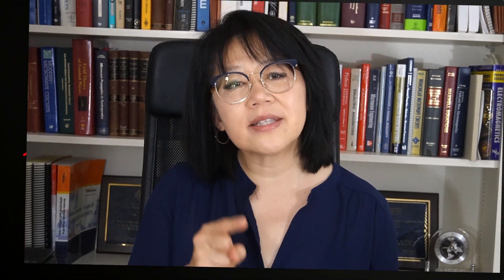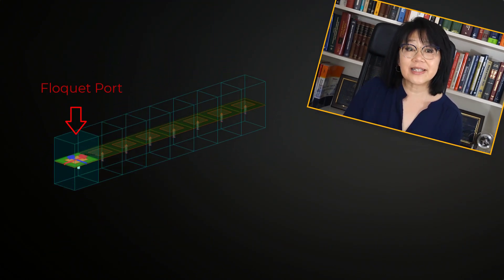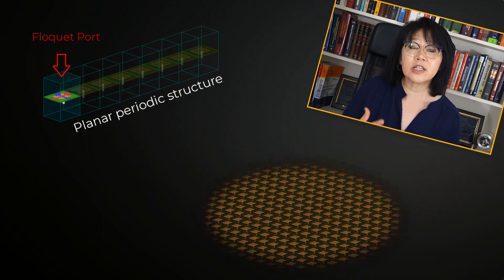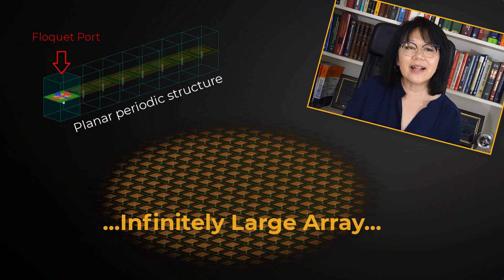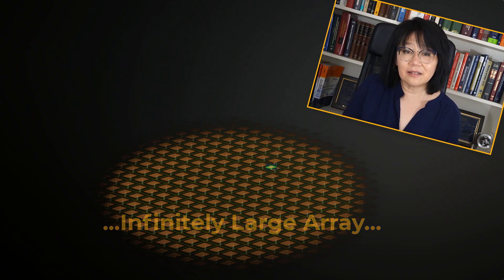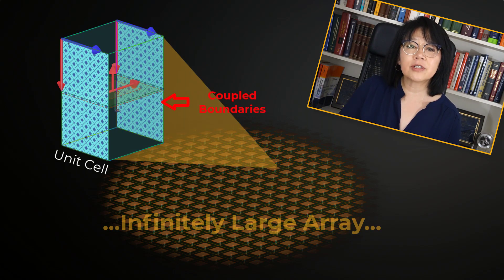Ports define where the signals go into and out of the simulation space. The Floquet port in HFSS is used exclusively with planar periodic structures — large arrays which can be idealized as infinitely large. The analysis of the infinite structure begins by analyzing a unit cell; coupled boundaries form the side walls of the unit cell.